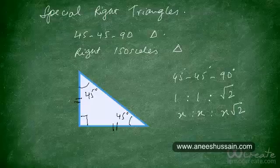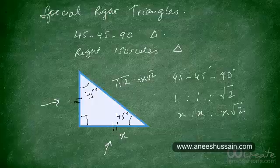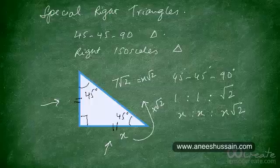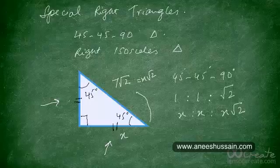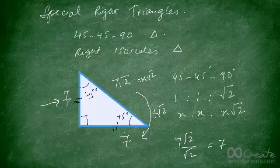What if the length of the hypotenuse is 7√2? What would be the lengths of the two legs? To find the base, we know that if the base is x, the hypotenuse is x multiplied by √2. So to go from the base to the hypotenuse we multiply by √2, which means to go from the hypotenuse back to the base we divide by √2. So 7√2 divided by √2 equals 7. Therefore the base is 7 and the perpendicular is also 7.